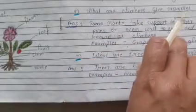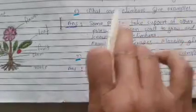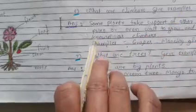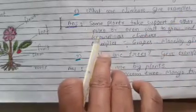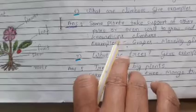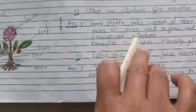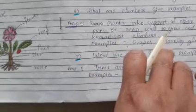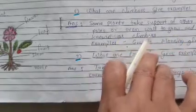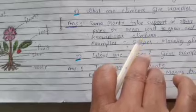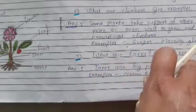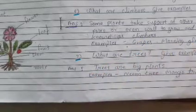What are climbers? Give an example. Some plants take support of other plants, poles, and even walls to grow, and are hence known as climbers. Example: grapes, morning glory.